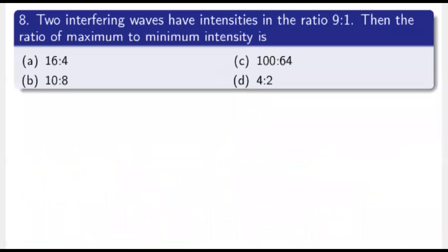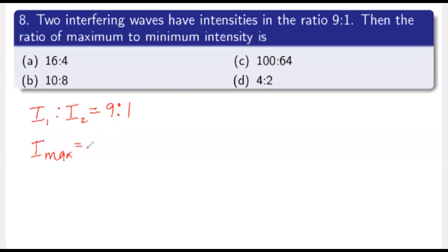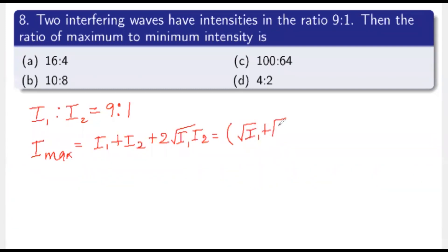Next question: two interfering waves have intensities in the ratio 9:1. Find the ratio of maximum to minimum intensity. Given I1:I2 = 9:1. The maximum intensity is I_max = I1 + I2 + 2√(I1·I2) = (√I1 + √I2)².